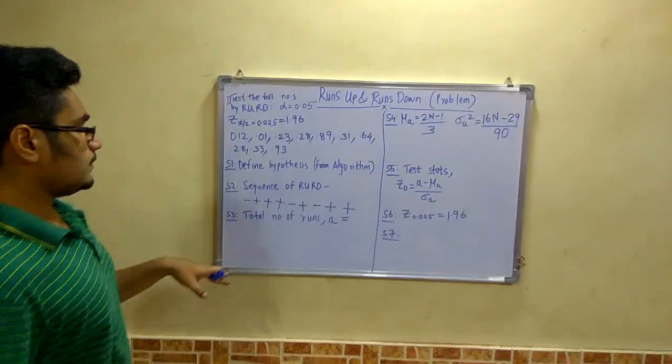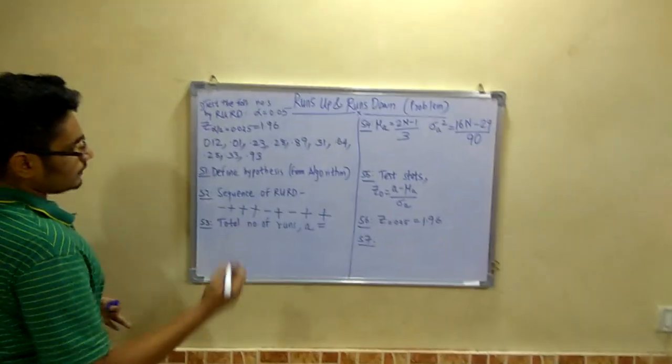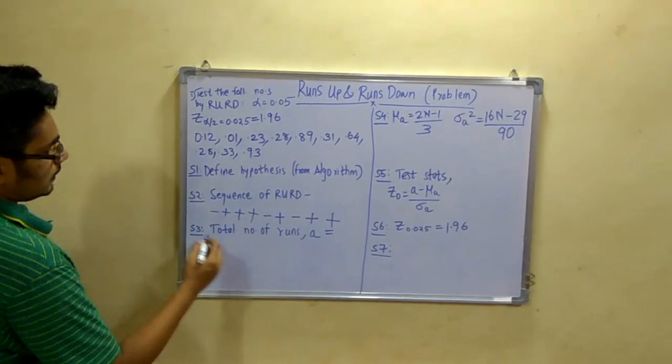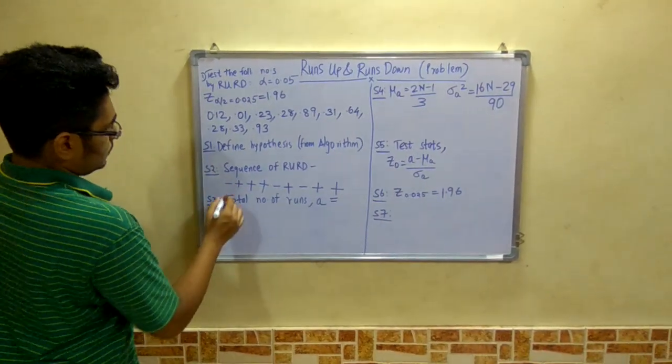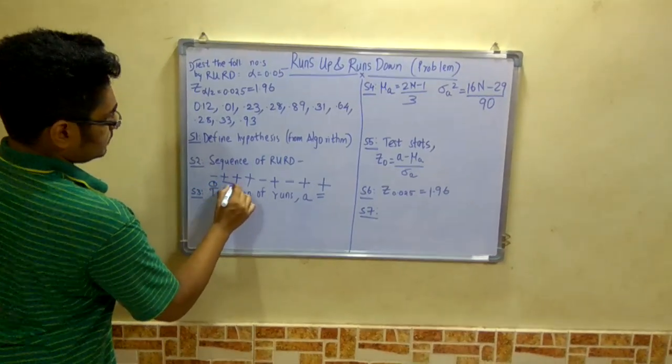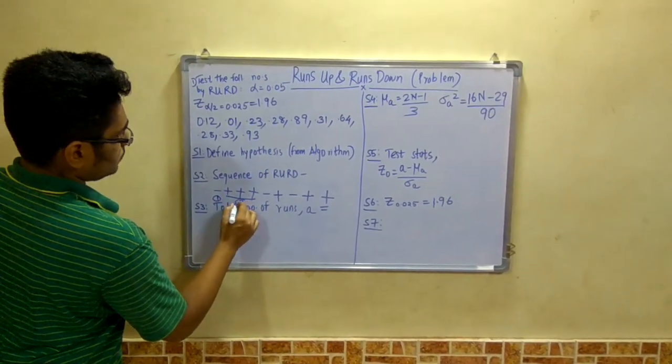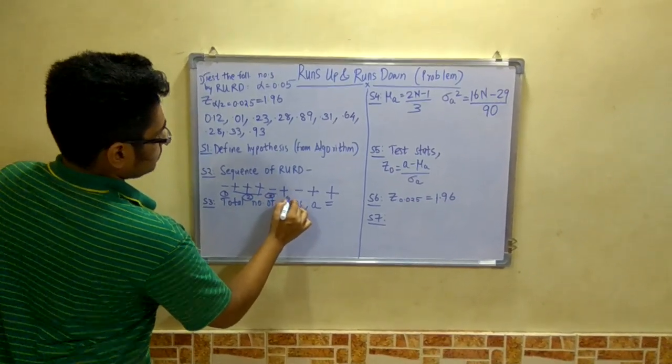After you do this, you have to count the total number of runs, that is the a. Now how will you count the total number of runs? This one negative is counted as 1. This sequence of plus is counted as 2. This is 3.